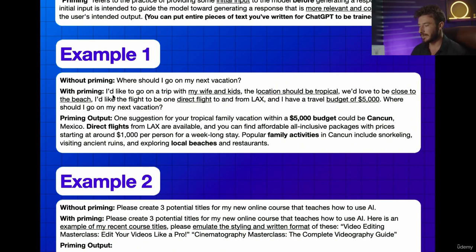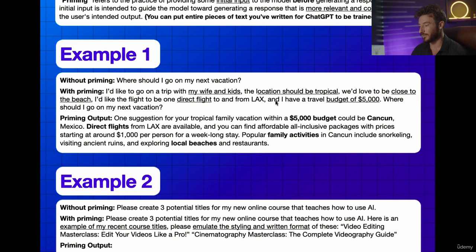Now, if we prime our prompt, we can say something like: I'd like to go on a trip with my wife and kids. The location should be tropical. We'd love to be close to the beach, and I'd like the flight to be a direct flight to and from LAX. My travel budget is $5,000. Then I ask: where should I go on my next vacation?